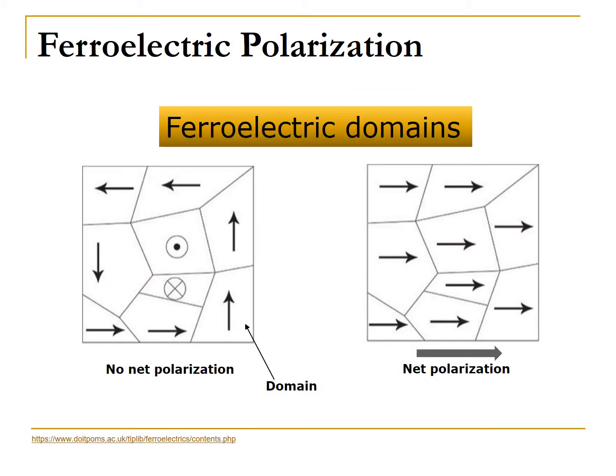Real-life ferroelectric materials are more often than not inhomogeneous. These small areas with homogeneous or anti-spontaneous polarization are called domains, and they are separated by domain walls. Domains in ferroelectrics range in size from only a few nanometers across to a micron. Even though each domain has its own net spontaneous polarization, the polarization of all the domains may cancel out and the material as a whole will not have a net ferroelectric polarization, as shown on the left. The ferroelectric domains can be aligned by applying an external electric field. On the right, all of the domains are aligned in the same direction, demonstrating a net polarization for the material.